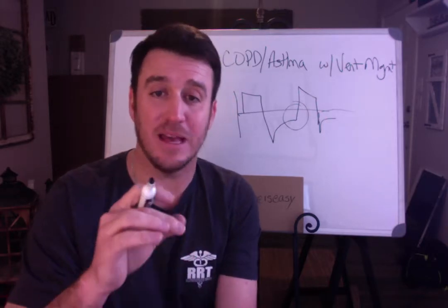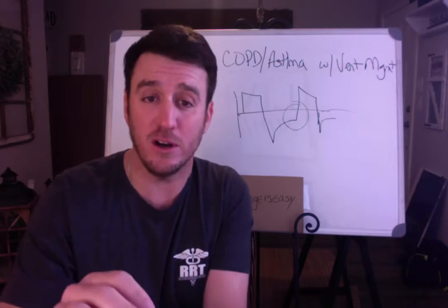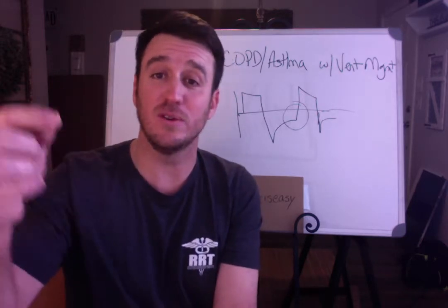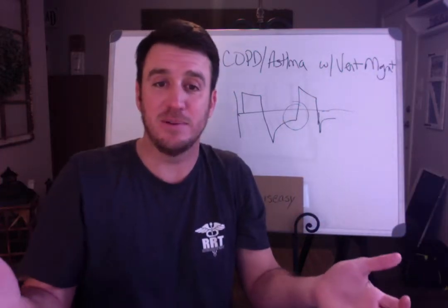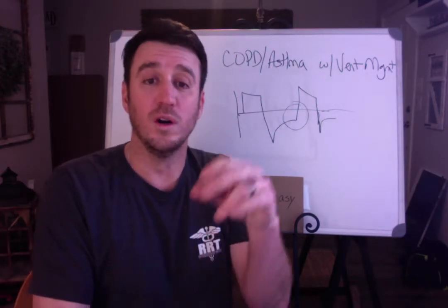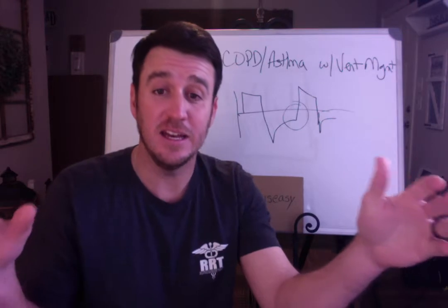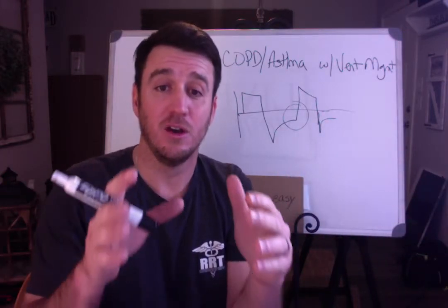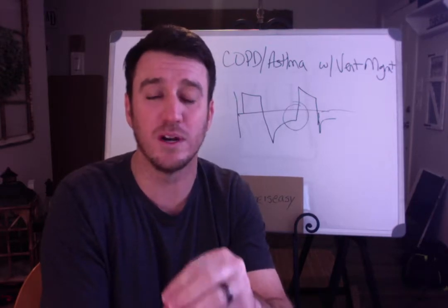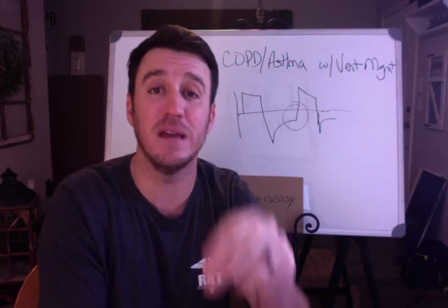If your patient's expiratory flow shows failure to return to baseline, that is air trapping — you need to give them a longer expiratory phase. Typically, if you're in a volume mode of ventilation, you can do this by increasing your flow. Increasing your flow will decrease your I-time and increase your E-time. You can also decrease your tidal volume, which will decrease I-time and increase E-time, or decrease your rate, which will extend your total cycle time and increase your E-time in volume mode.